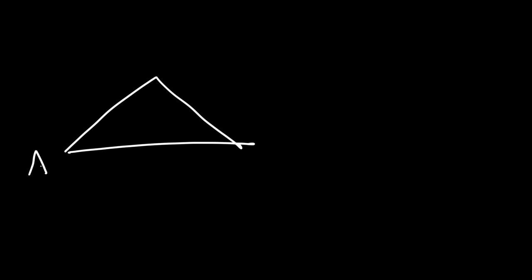In this lesson we're going to talk about the law of sines. So let's go over the formula. Let's say we have a triangle where this is angle A, B, and angle C. Across angle A you have side A, across angle B there is side B, and across angle C is side C.